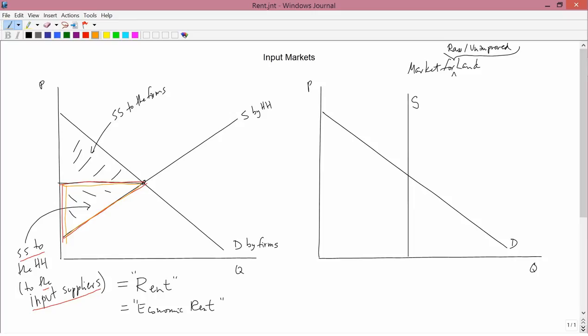Imagine this point as a pivot point. Imagine twisting the supply curve this way and this way so that it ends up in this position, in a vertical position. So think of now what happens to the rent area. This line stays the same, this stays the same, but this is rotating out like that.